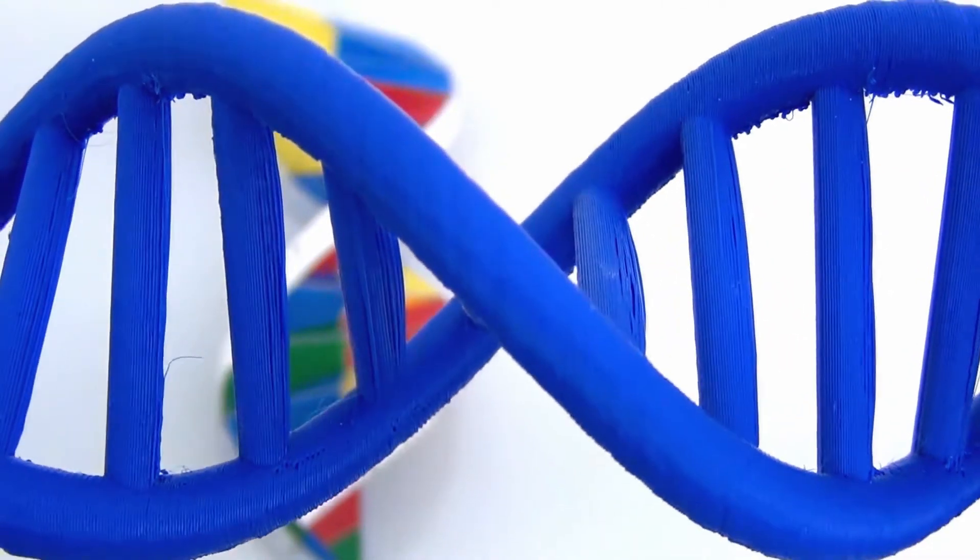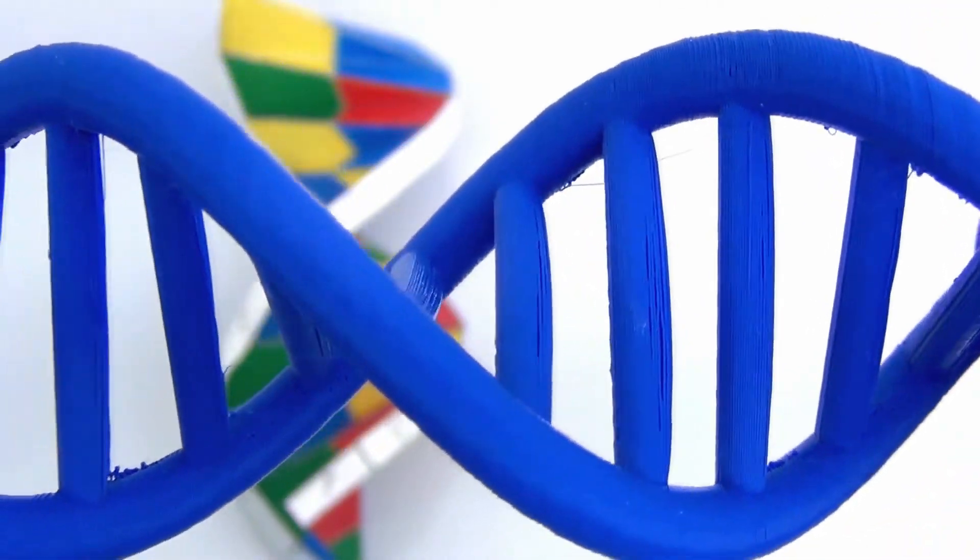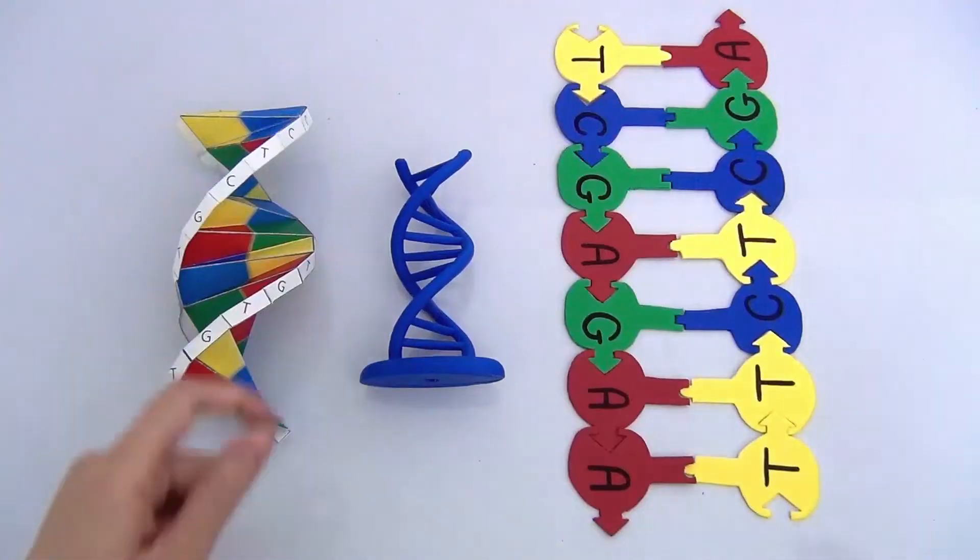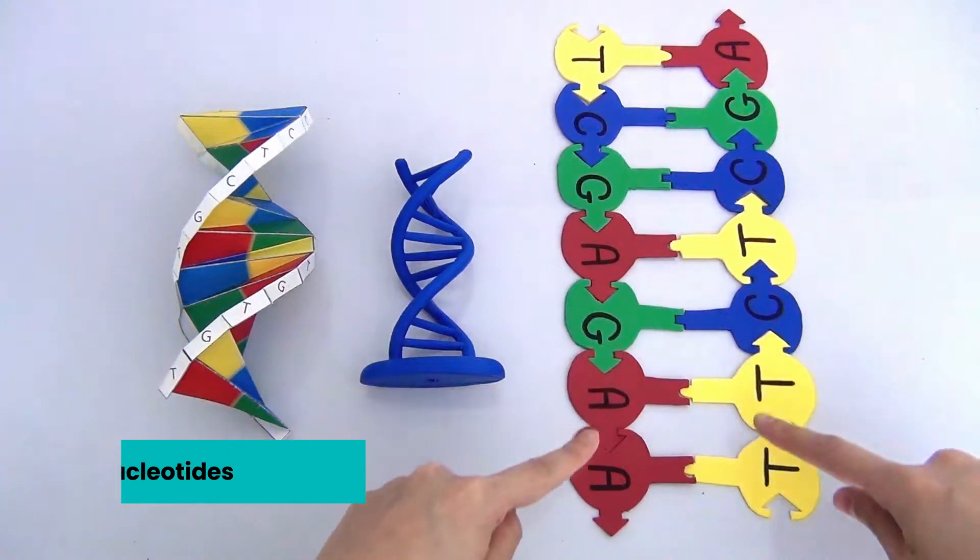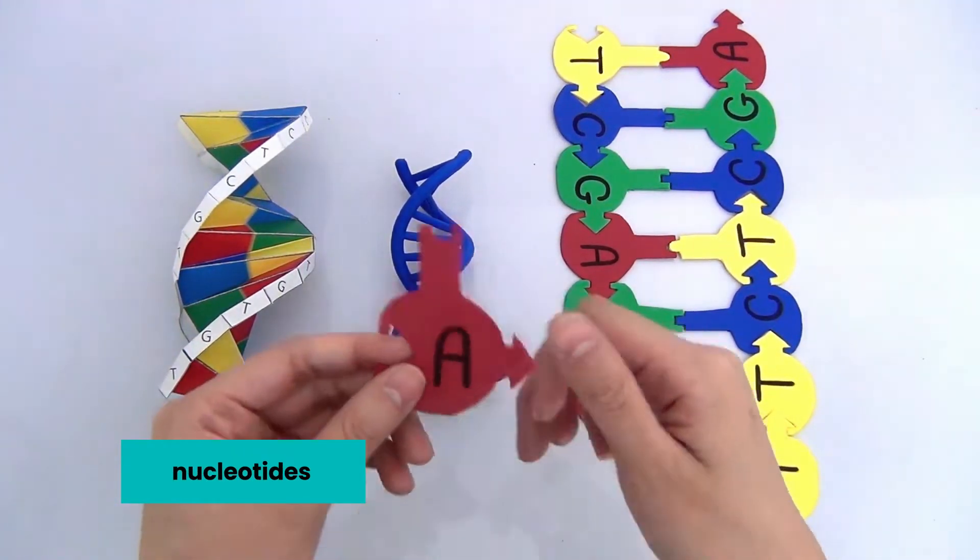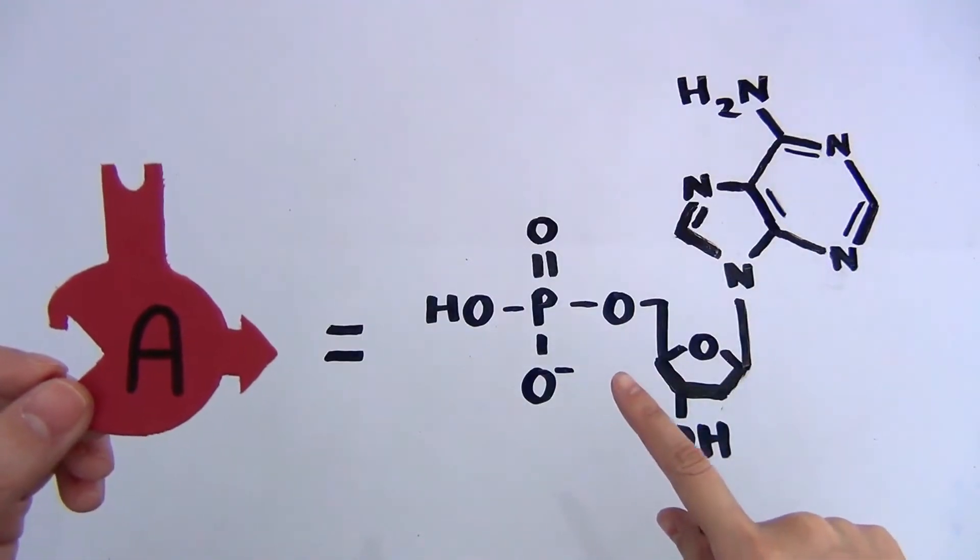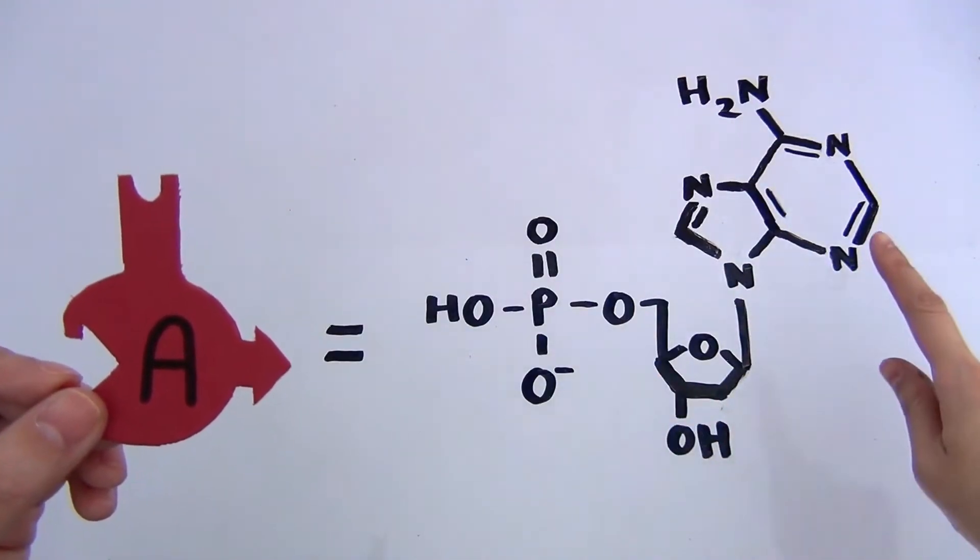If you zoom in real close to look at DNA, it'll look a little like a twisted ladder. We call that shape a double helix. The two strands of twisted DNA are made of small molecules called nucleotides. Each nucleotide is made up of a phosphate, deoxyribose sugar, and a nitrogenous base.